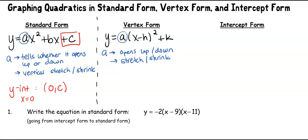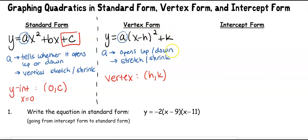What's unique about vertex form is that it tells you where your vertex is located. Your vertex is going to be at (H, K), where H is the horizontal shift and K is the vertical shift. Those transformations show you the coordinates of your vertex.